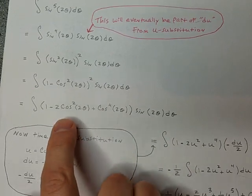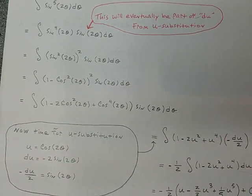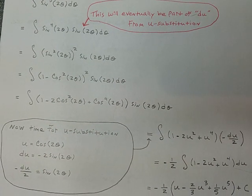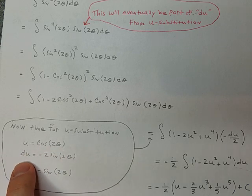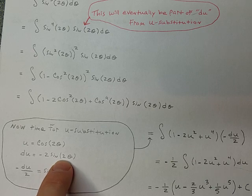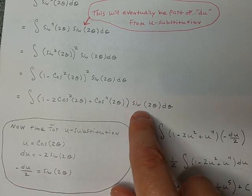And now we have it right here to the point that we can do some u substitution. Let u be cosine of 2 theta, and that makes du negative 2 sine 2 theta. And we do a little rearrangement to make the u substitution fit up there.